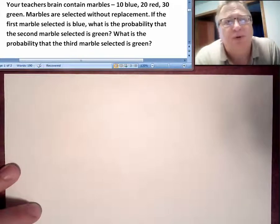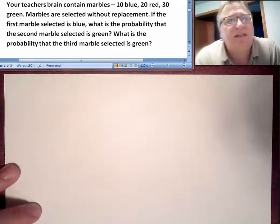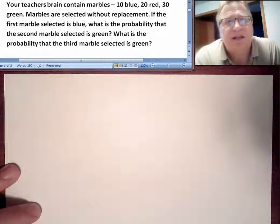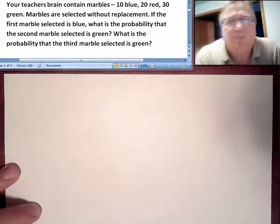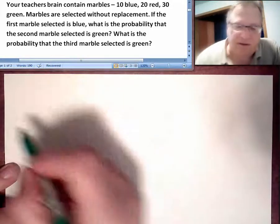The question says, if the first marble selected is blue, what is the probability that the second marble selected is green? I don't want to go beyond that point for right now. First of all, let's refresh.